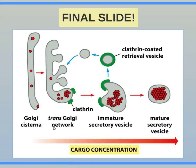The Golgi cisterna goes to the trans-Golgi network. You have vesicles which might be large and not too concentrated with cargo. Vesicles can add together, and triskelions can pinch off extra pieces so that you have vesicles that are extremely concentrated, because the cell won't waste material. Thank you for watching — like and subscribe for more content, and have a nice day!